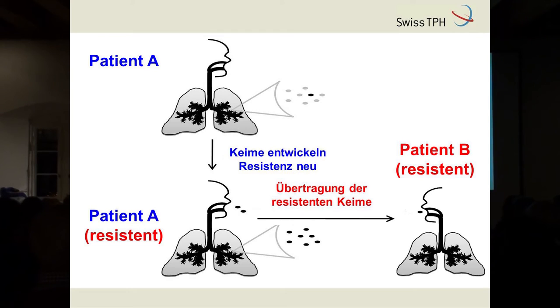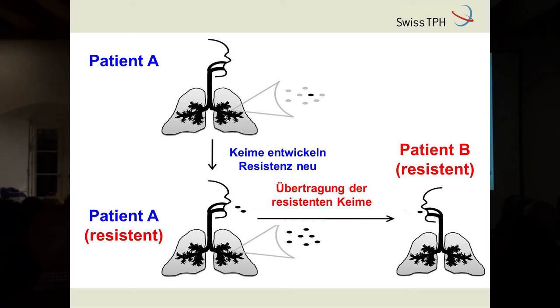Das andere Szenario ist, wenn ein Patient schon resistente Bakterien hat, kann er die direkt an einen Patienten B übertragen. Das heißt, Patient B hat das Pech, schon von Anfang an sich mit diesen resistenten Bakterien infiziert zu sein.